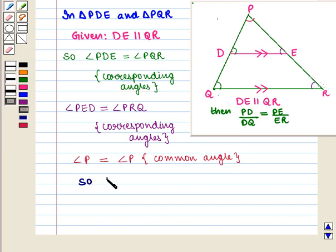So, by AAA rule, that is, angle angle angle rule, we say that triangle PDE is similar to triangle PQR.